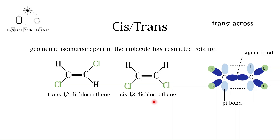Note that both cis and trans come from Latin. The cis-trans naming system only works for simple alkenes. To use this naming system, the carbon atoms involved in the double bond must be bonded to two different groups, and one of these groups must be hydrogen. In our example we see that each carbon is bonded to a hydrogen atom and another atom — in this case chlorine.